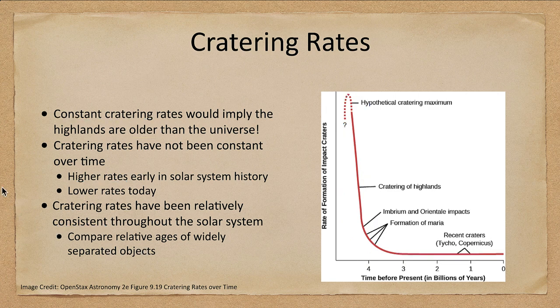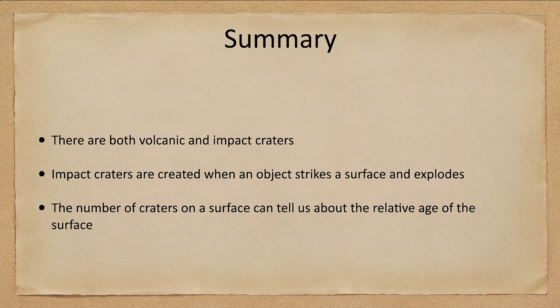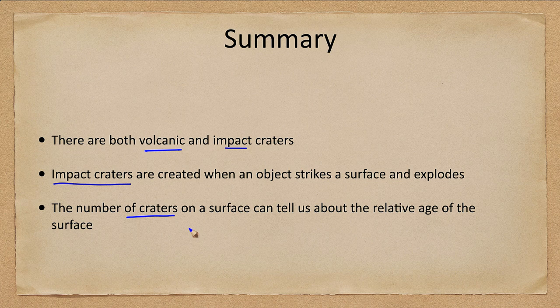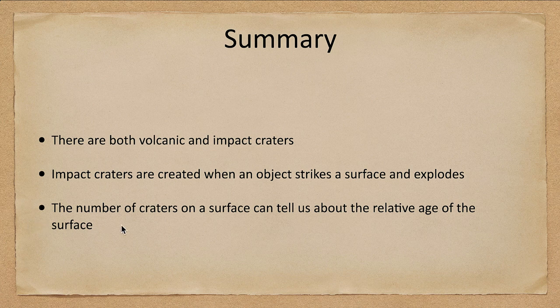Let's finish up with the summary. We talked about volcanic and impact craters, with impact craters being created when an object strikes the surface and explodes. The number of craters on a given surface can tell us about the relative age of that surface. We will use this when we get to other parts of the solar system — when we look at things like Mercury, Venus, Mars, and the moons of the outer solar system — to learn the relative ages of different surfaces. That concludes this lecture on impact cratering.